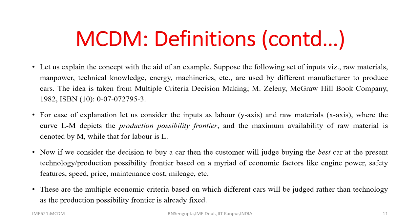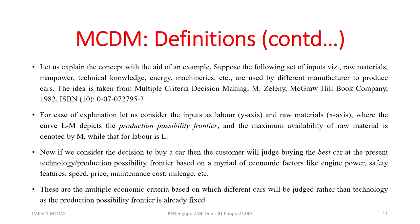The maximum availability of raw materials is denoted by point M, and labor by point L. If we consider a decision to buy a car, the customer will judge it based on the production possibility frontier and a whole set of economic factors: engine power, safety features, speed, price, maintenance cost, and mileage. These are multiple economic criteria based on which different cars will be judged. Different makes — different SUVs and companies — will have different levels of these economic factors assigned.